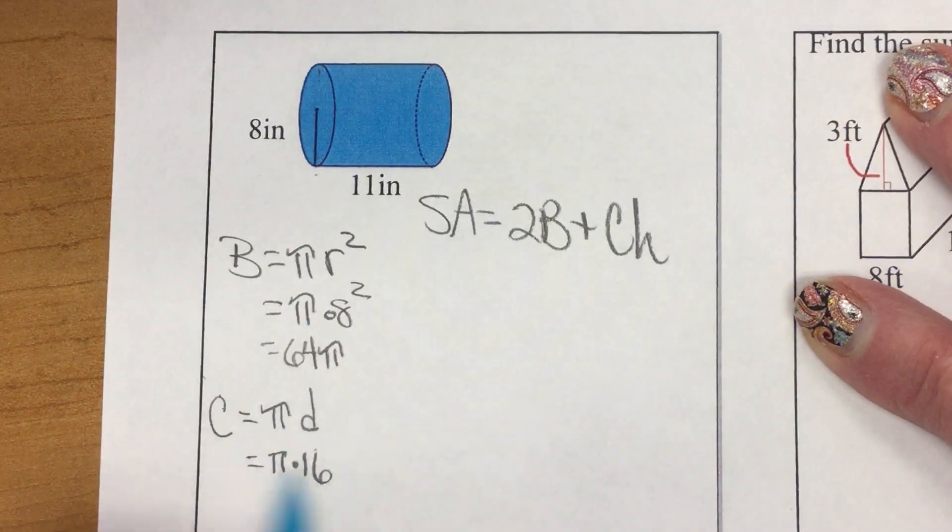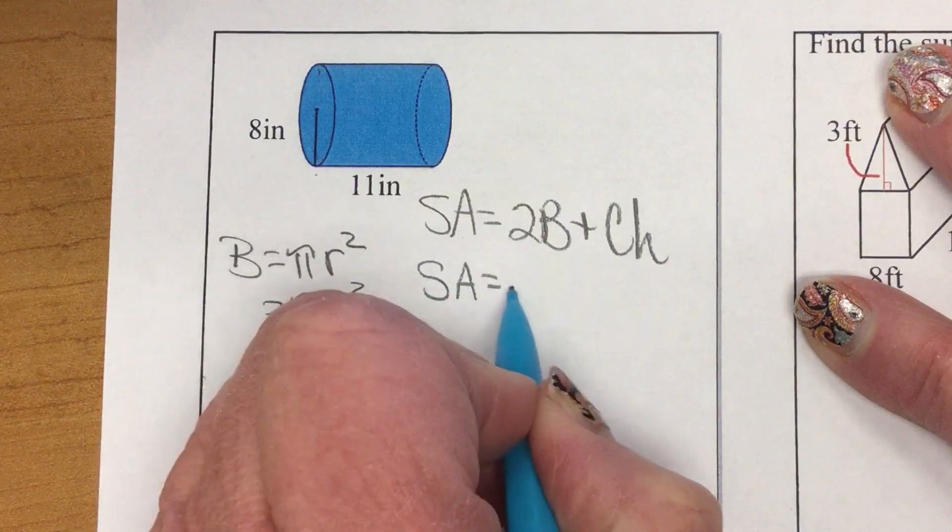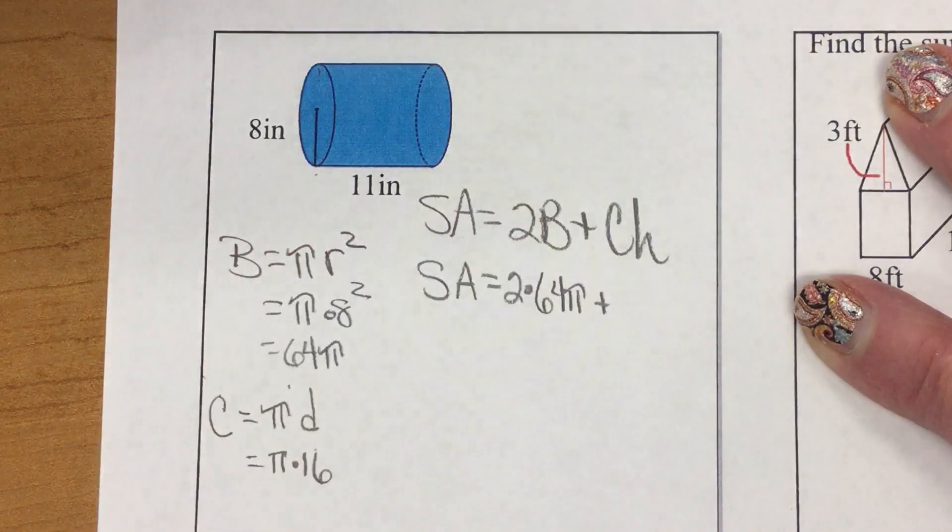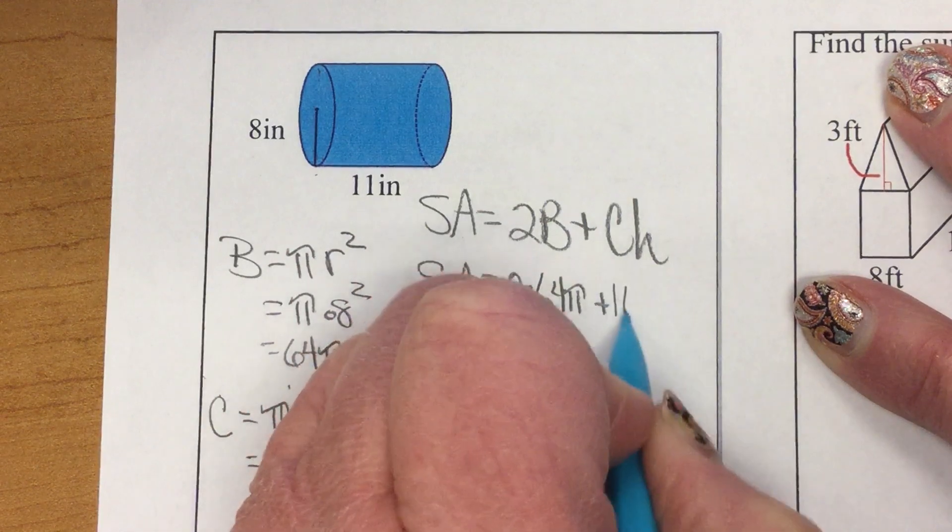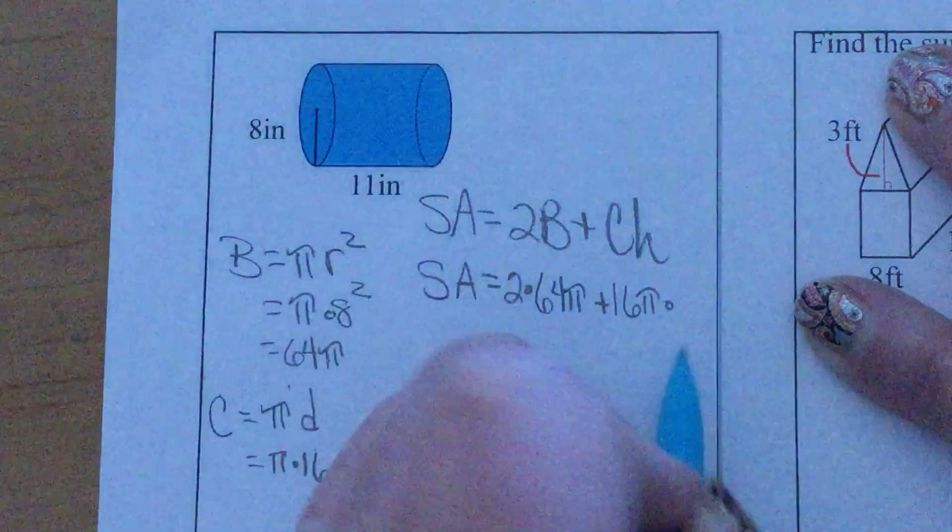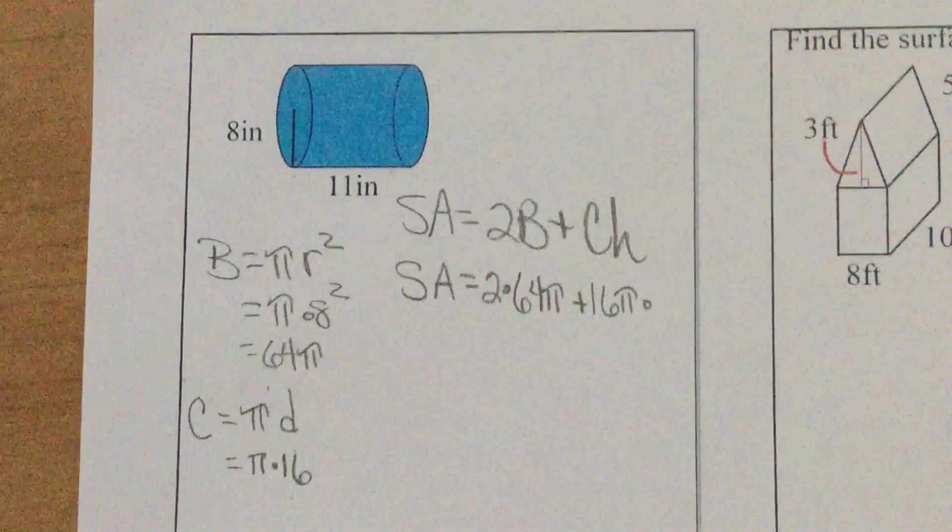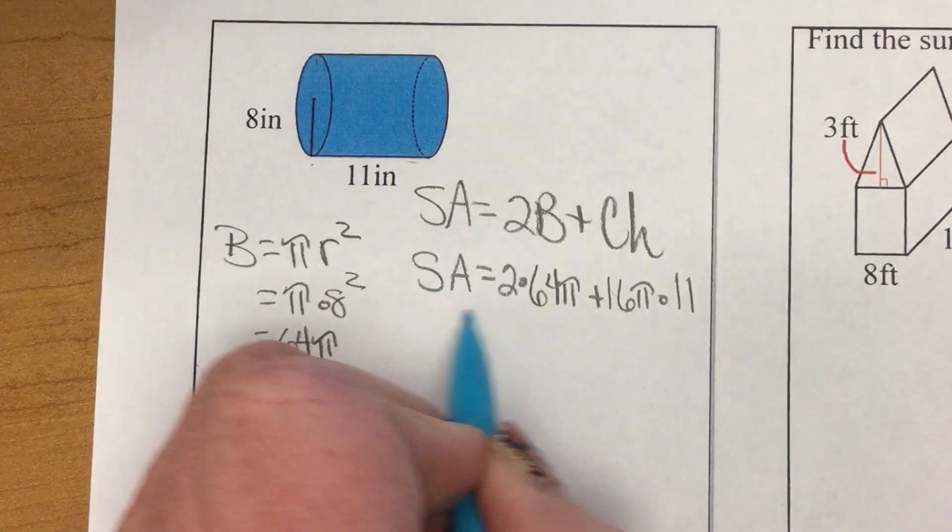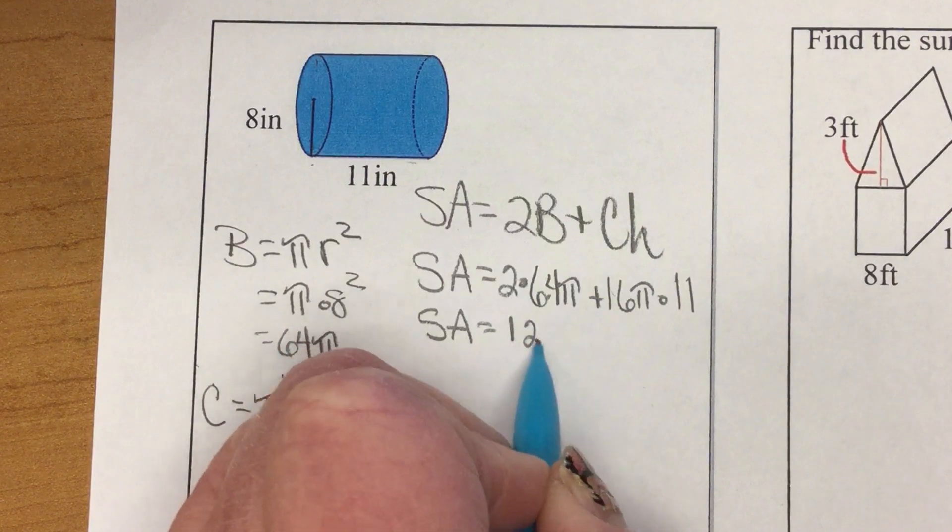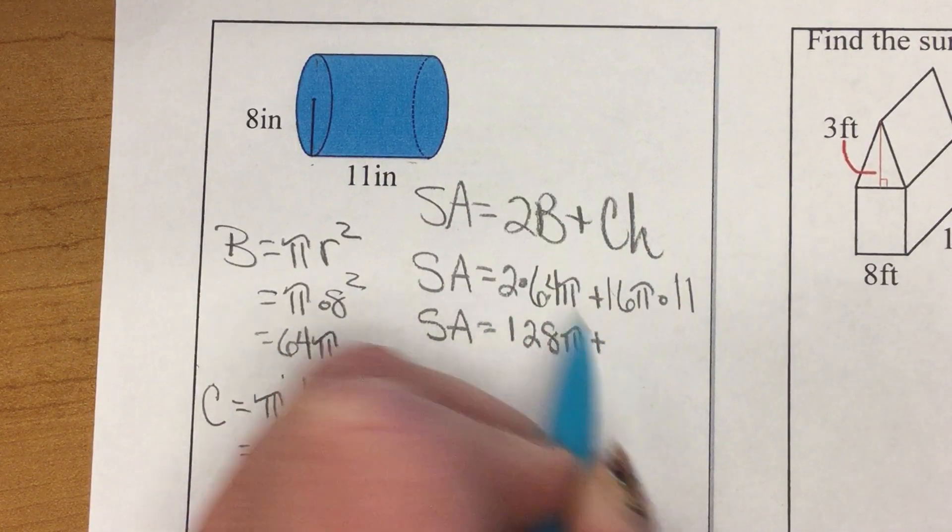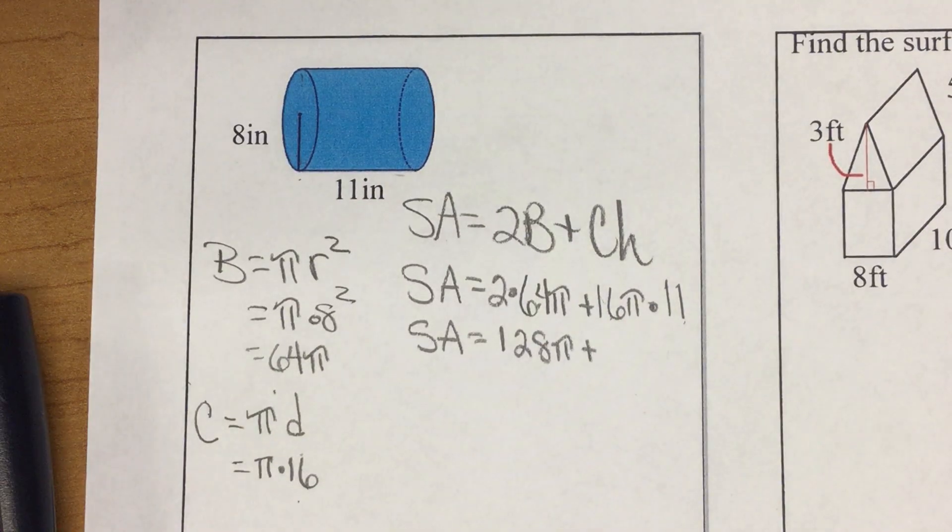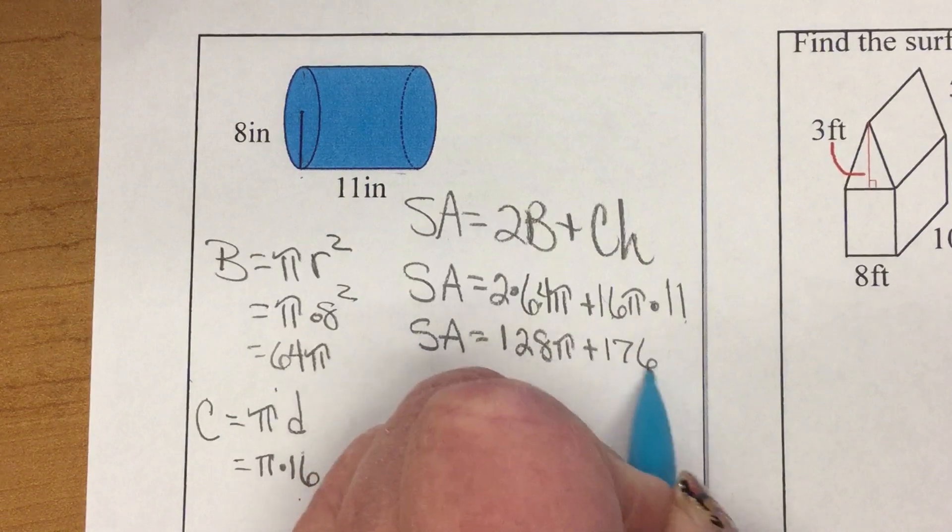So, I'm going to substitute those in. So, I have 2 times 64 pi plus 16 pi times a height of 11. So, this gives me 128 pi plus 16 times 11. Goodness.